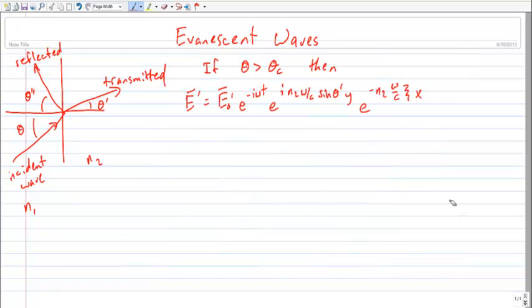So what happens if you take a look at the field in the transmitted region when the input angle is greater than that critical angle? The amplitude stays the same, e to the minus i omega t stays the same. You get this propagating term that has a y in it, and you get this funny e to the minus n2 omega over c big squiggle x. That comes from taking the thing that was of the form e to the i cos theta prime and subbing in i squiggle into that. So the i's combine to give you the minus, and everything's great.